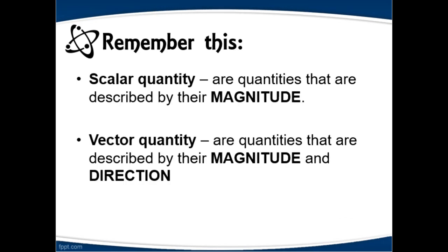So, in summary, scalar quantities are quantities that are described by their magnitude only. On the other hand, vector quantities are quantities that are described by their magnitude and direction.